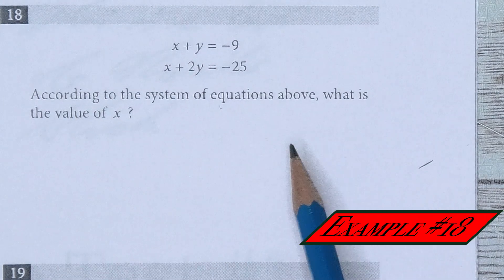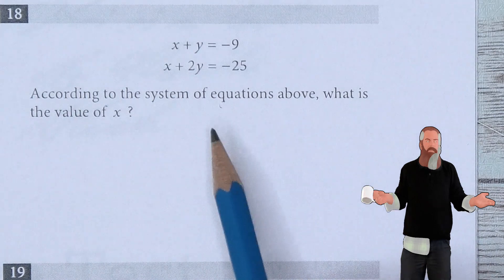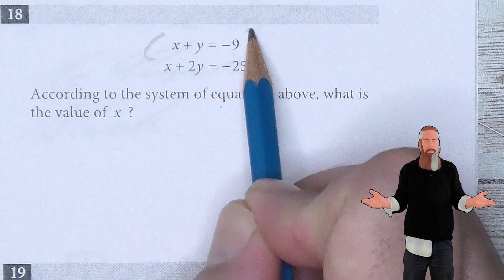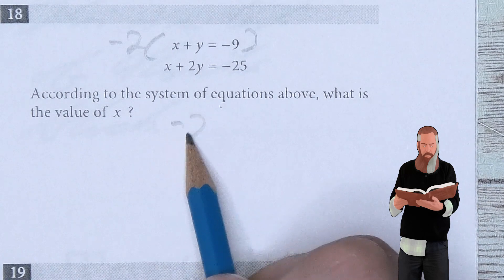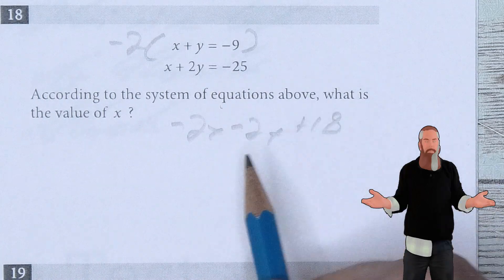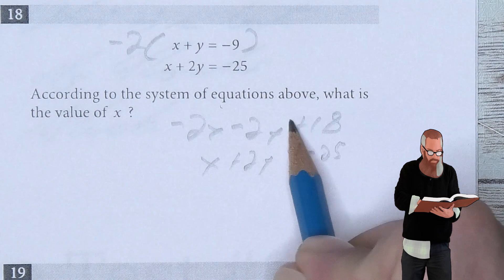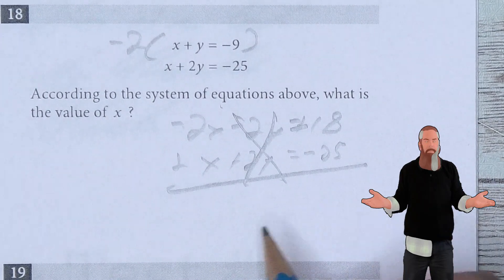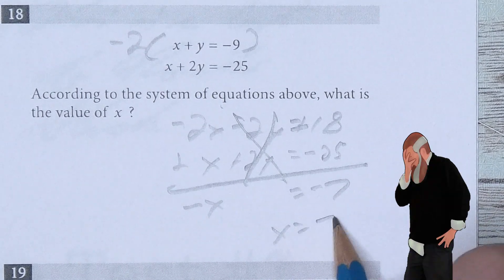According to the system of equations above, what is the value of x? Using the elimination method to get rid of y, multiply the top equation by negative 2, giving negative 2x minus 2y equals negative 18, then copy the bottom equation x plus 2y equals negative 25. Adding both equations eliminates the y terms, giving negative x equals negative 7, so x equals 7.